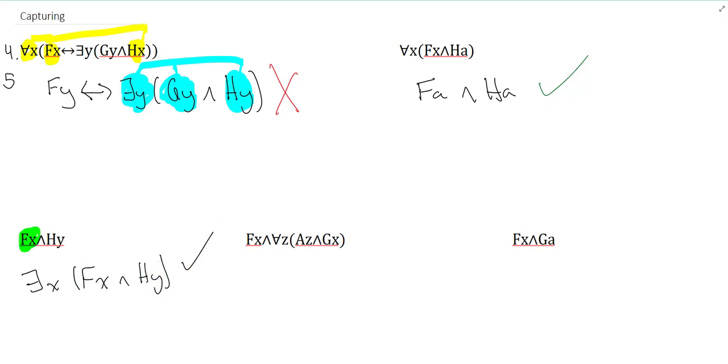But it turns out that this x is somewhat arbitrary. I could replace it with a different variable letter if I wanted, like z. And we all know that this is perfectly correct, too. But there is one variable letter that I cannot select. And let's take a look. The one that I can't pick is y.